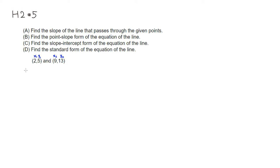For part A, if you want to find the slope m, remember that this is just going to be y2 minus y1 over x2 minus x1. So in this case, y2 is 13 minus y1 is 5, all over x2 is 9 minus x1 is 2. So this is 13 minus 5 is 8, over 9 minus 2 is 7.